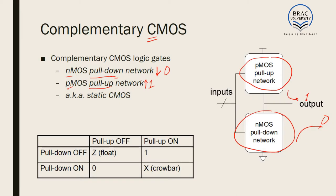If we had no pull-down network, we could never make the output zero. If we had no pull-up network, we could never make the output one. As a result, they are complementary to each other. The pull-down network is entirely made of NMOS and pull-up network is entirely made of PMOS, which are also complementary to each other. As a result, they are called complementary or CMOS technology. It is also known as static CMOS.